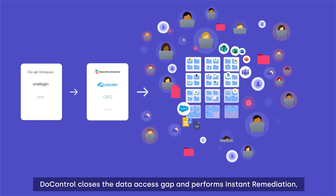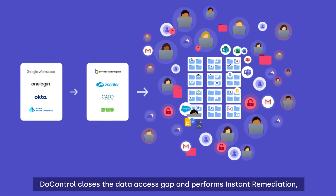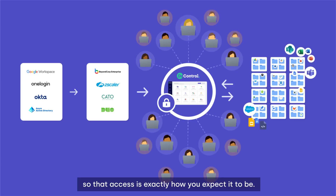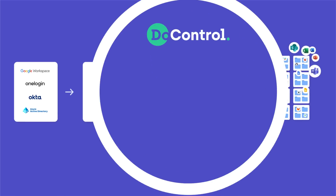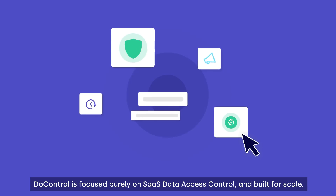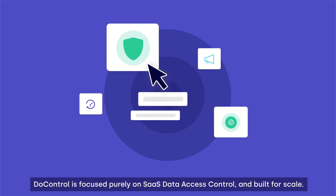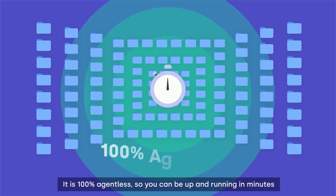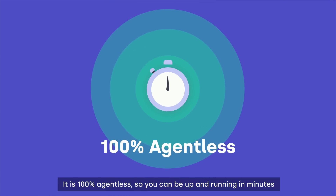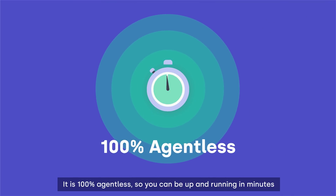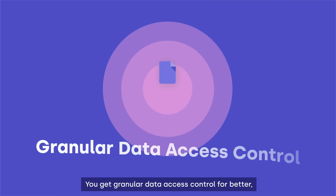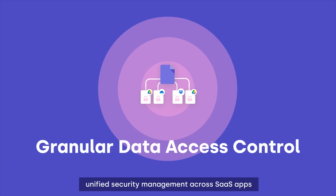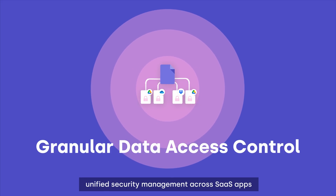DoControl closes the data access gap and performs instant remediation so that access is exactly how you expect it to be. DoControl is focused purely on SaaS data access control and built for scale. It is 100% agentless, so you can be up and running in minutes. You get granular data access control for better, unified security management across SaaS apps.